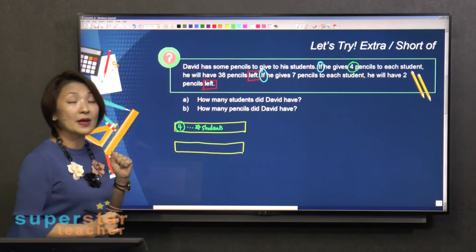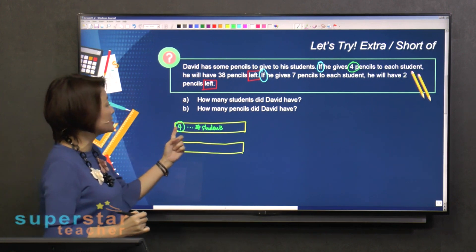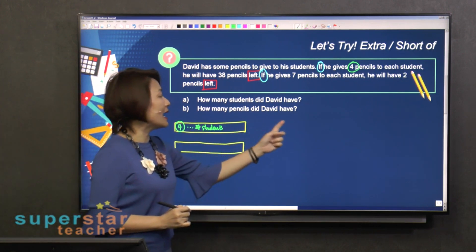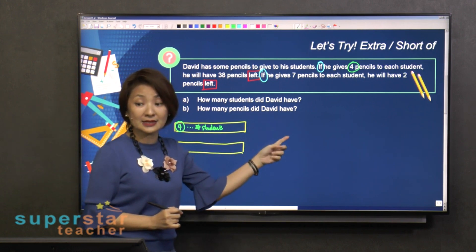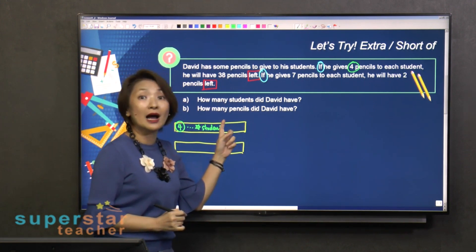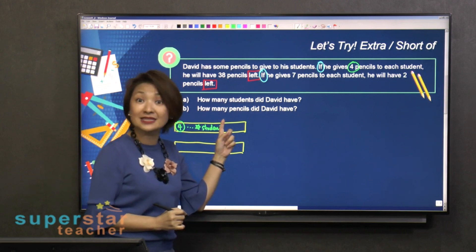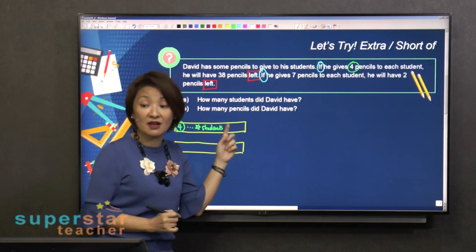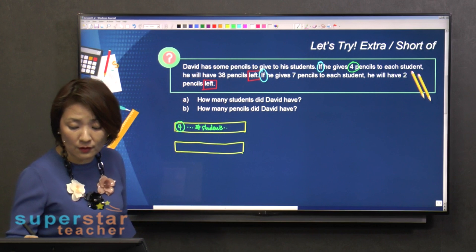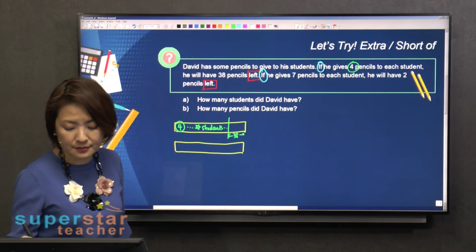And then he will have 38 pencils left. 38 pencils left means did he buy some more? Did he find some more? Or did he have extra left? Left means he did not finish using all of his pencils. So this will be 38.